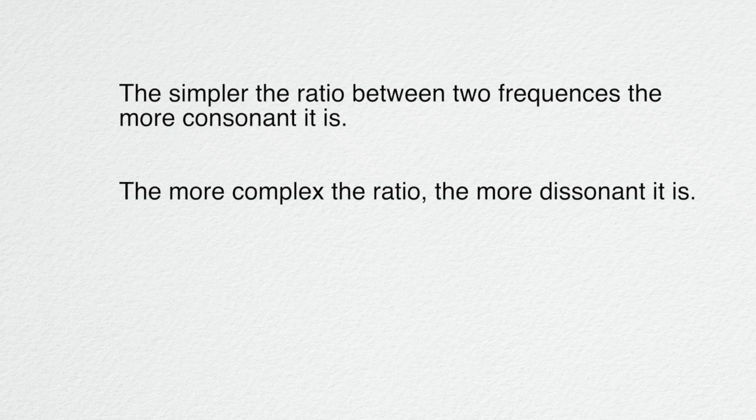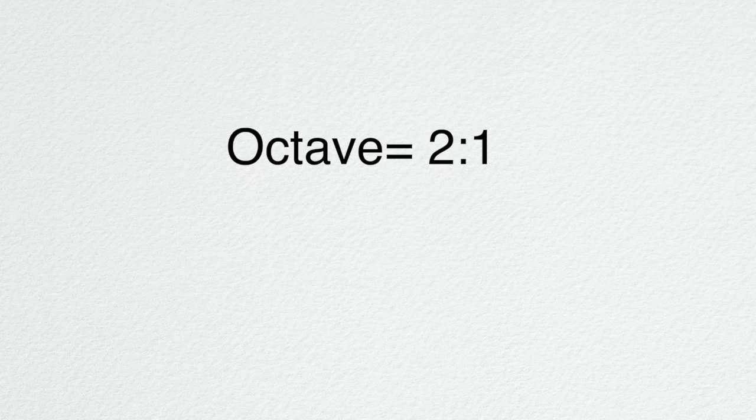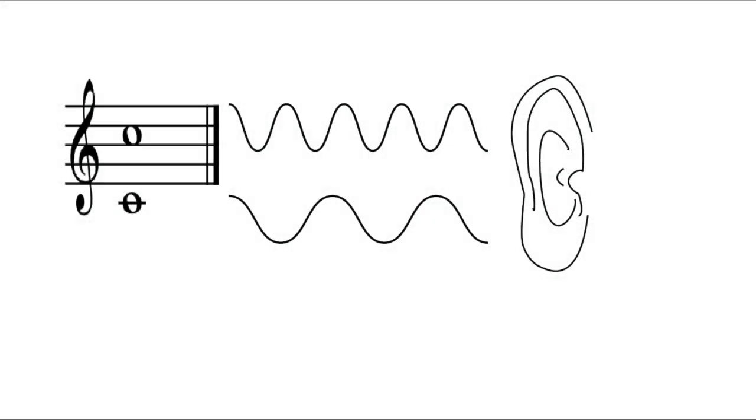Basically, the more work our brain has to do to process the two notes together, the more unhappy it is. And then we experience that by feeling tense and that the sound needs to be resolved to simpler and easier set of ratios between frequencies. For example, the octave is the simplest possible ratio, two to one, meaning that the upper note in the octave vibrates against your eardrum exactly twice as often as the lower one. It is so consonant in that regard that we hear it as just another version of the same note, just higher.